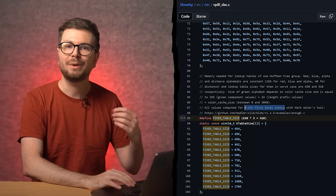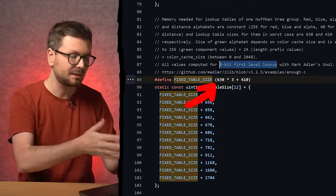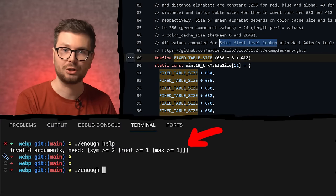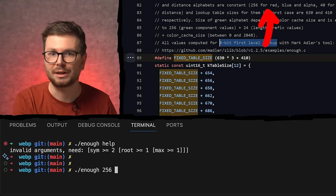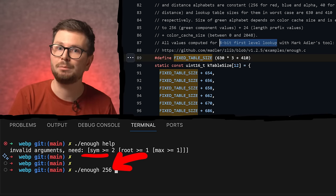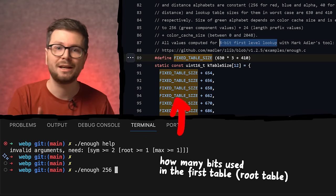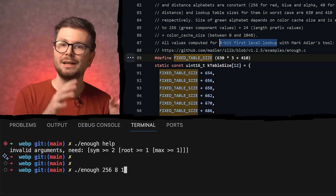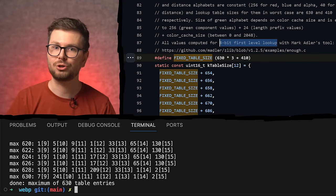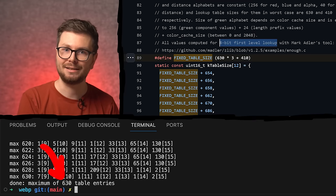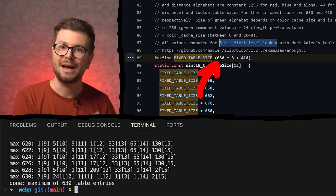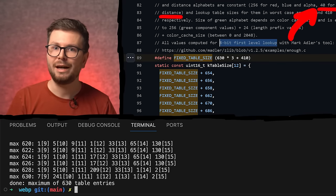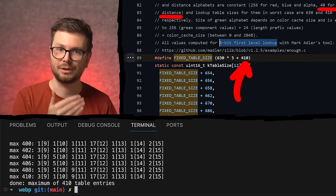And if we now go back to the webp source code, we can finally understand where the hardcoded table sizes come from. Apparently this is the result from running a tool called enough.c. All values computed for 8 bit first level lookup. Let's run this tool with some of the parameters mentioned here. So the first table, used for example for the color red, will cover 256 symbols. Those are our 256 different possible color values. The question: how many bits for the root table, the first table? This will be 8 bits. But can the second table still explode in size? No. We only support a max code length of 15 bits. These are our parameters and this tool now performs an exhaustive search, so a brute force to find the maximum possible table size when compressing data. In this case we get the result 630. So we have 630 as the table size for red, blue and the alpha pixel channel, 630 times. And then we also have this distance value. And that only has 40 symbols, which results in a size of 410.